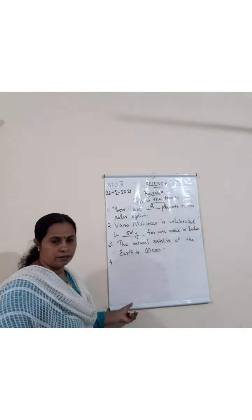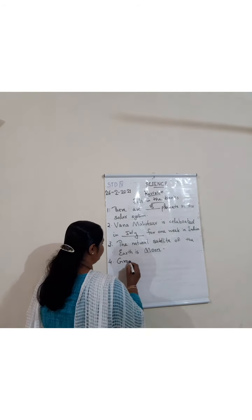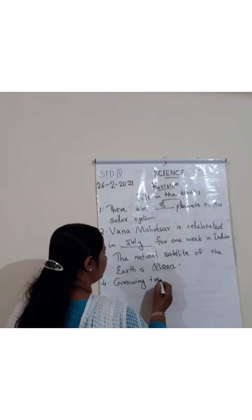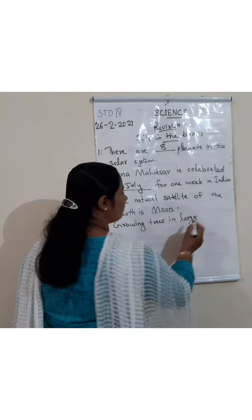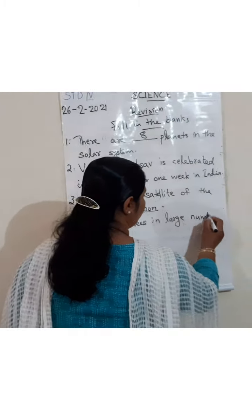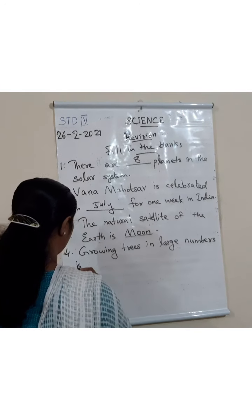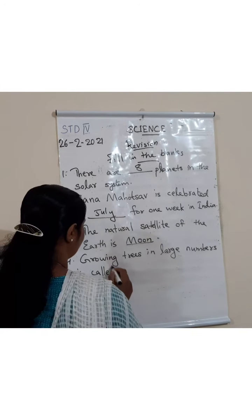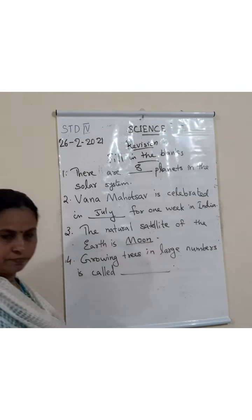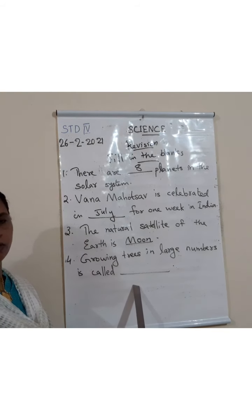Growing trees in large numbers is called dash.